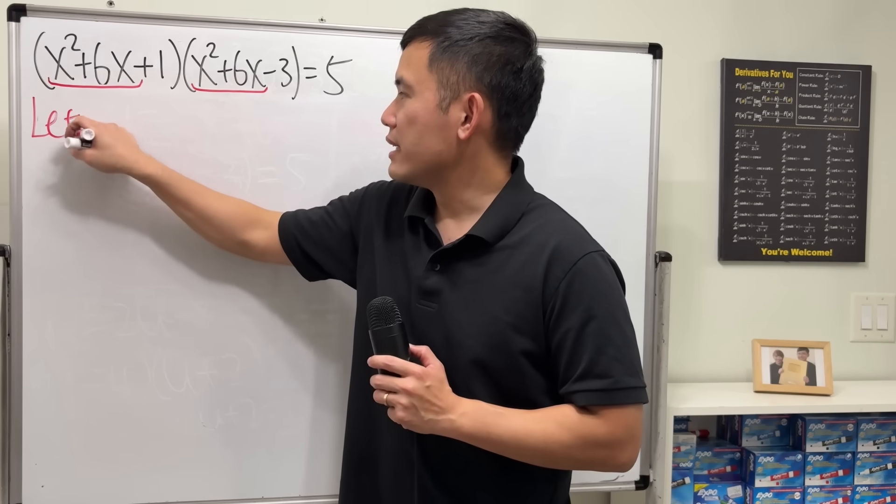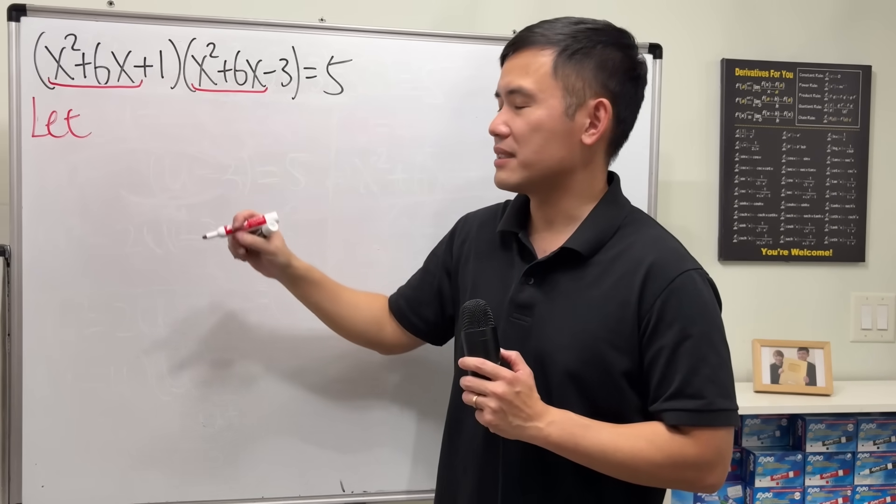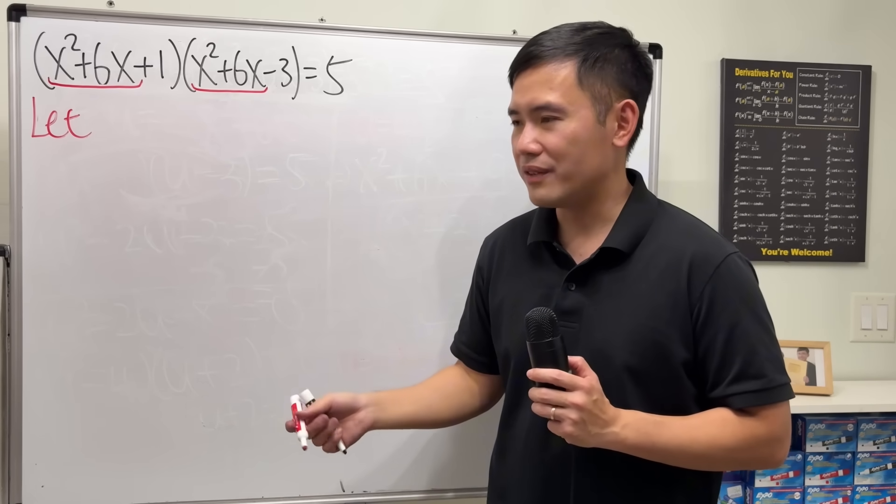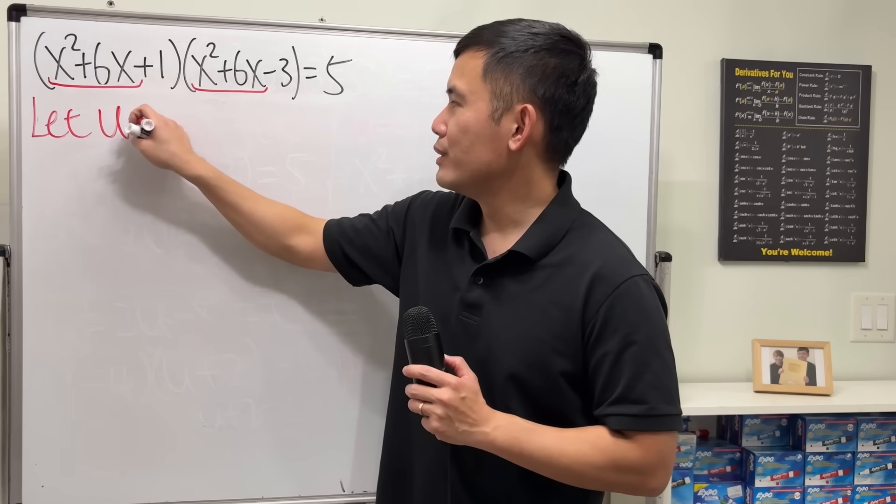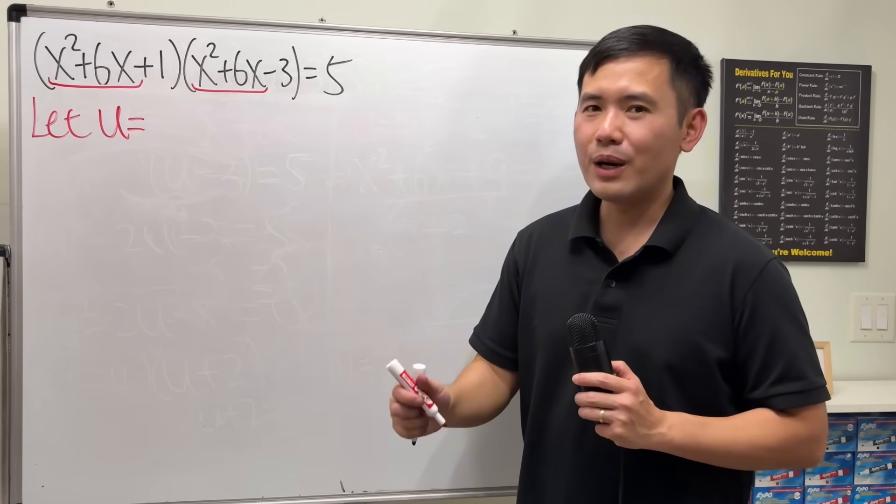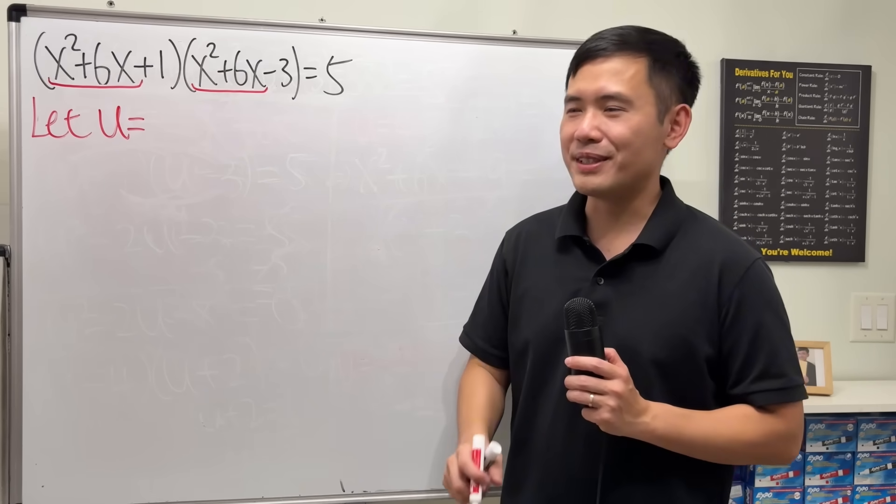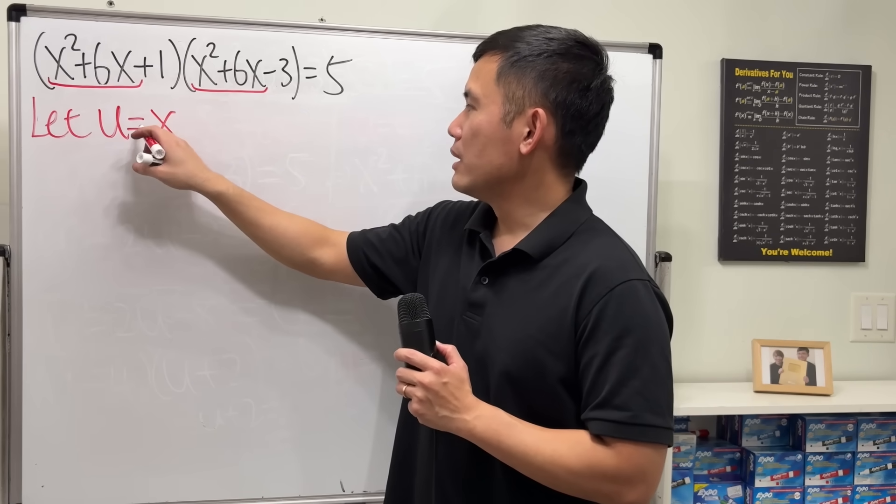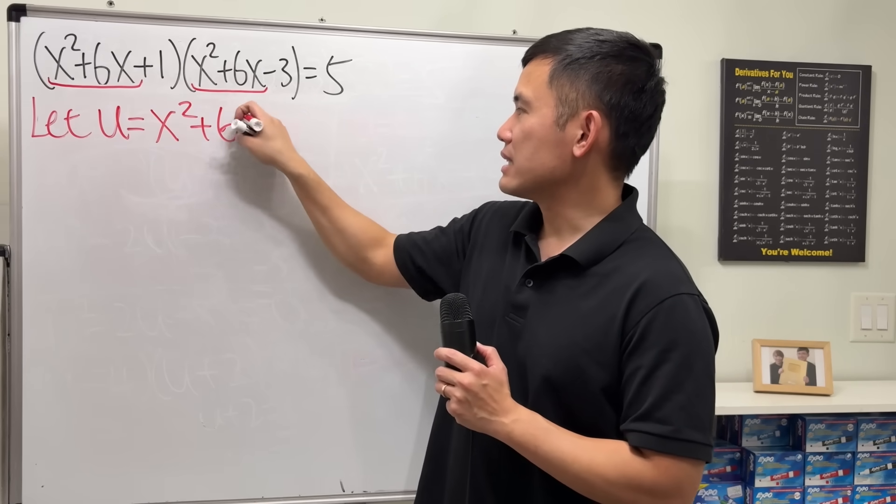You can start off by saying, pick a different letter besides x, y, z, t, abc, whatever. But I'm going to pick u, because this would be just like the calculus integral u substitution. Anyways, pick u equal x squared plus 6x.